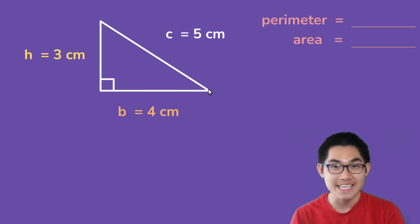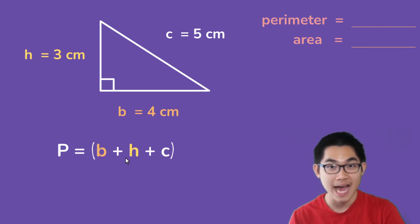So what is the perimeter of this triangle? Well remember in the last video the perimeter is just all the sides added together. And so the perimeter is the base plus the height plus C.